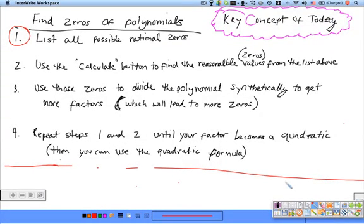Okay, here's the key concept of today. Now, this can be tricky. It gets hard sometimes, so just pay attention and try to do the best you can. How do you find zeros when it's a complicated expression, which I'm going to give you? Number one, list all possible rational zeros.